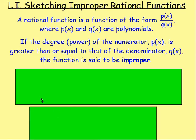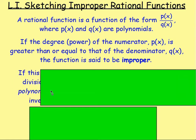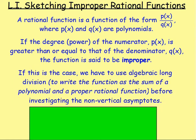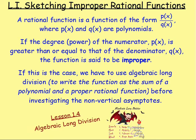If that is the case, you have to rewrite your function as the sum of a polynomial and a proper rational function. To do that, you have to think back to algebraic long division. You have to use algebraic long division to express your improper rational function as the sum of a polynomial and a proper rational function, and you need to do that before you investigate the non-vertical asymptotes.